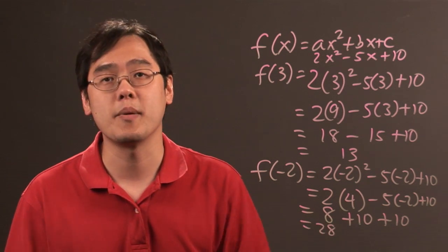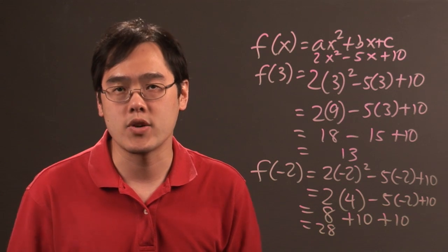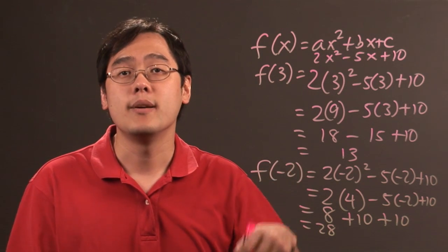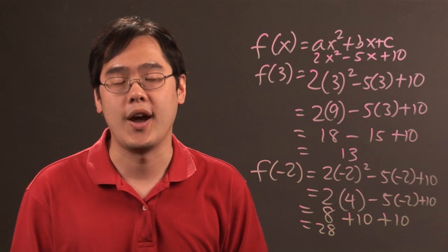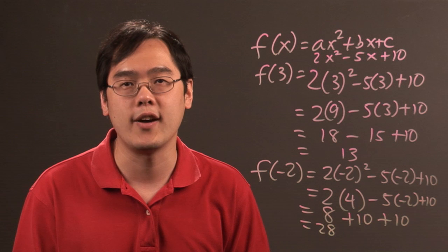So the irony here is by plugging in a negative number you actually got a higher value as a result. But the bottom line is if you have a quadratic function and you want to find the indicated values you just plug in whatever number you want back in the original function and you'll have the result. So I'm Jimmy Chang and that's an introduction to quadratic function solving for indicated values.